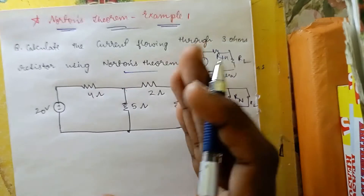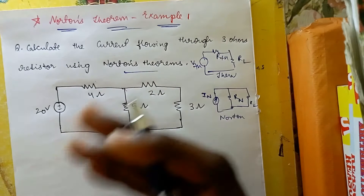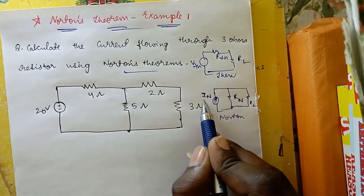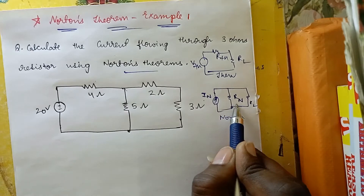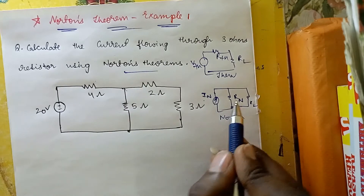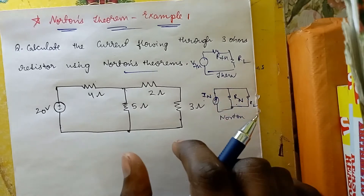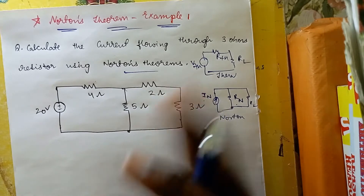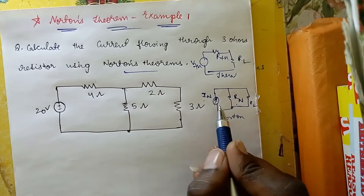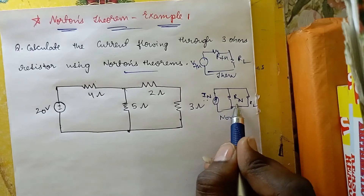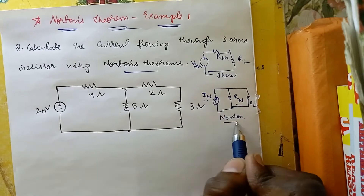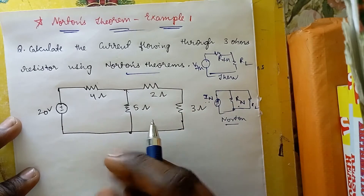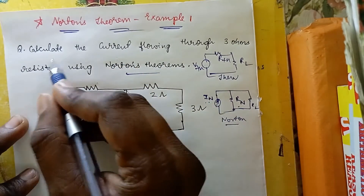The statement of Norton's theorem: whatever the number of current sources, voltage sources, and resistances you have in a circuit, ultimately we will get only one current source in parallel with Rn. That is the Norton's theorem statement — finally we will have only one current source in parallel with one resistor.